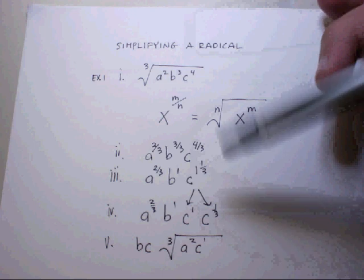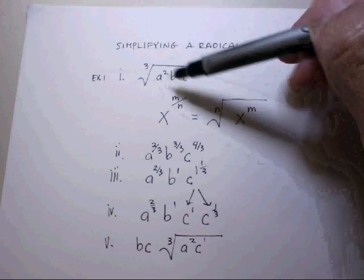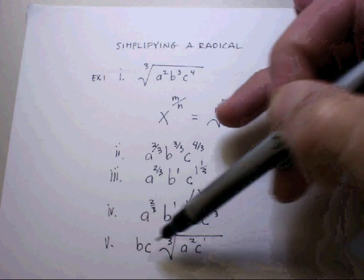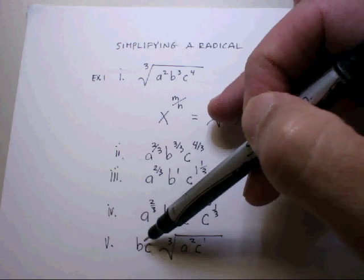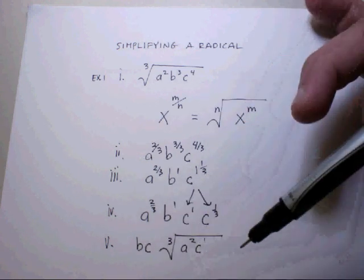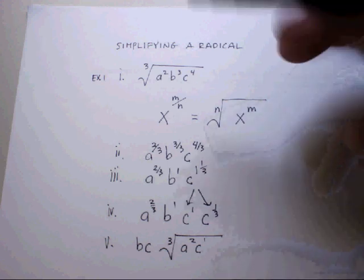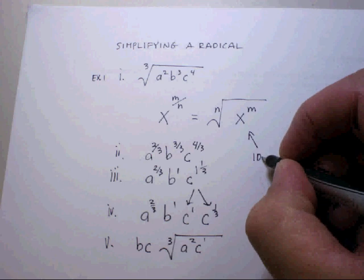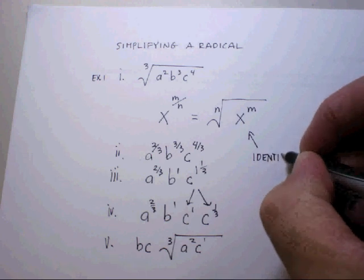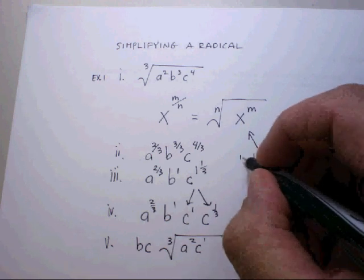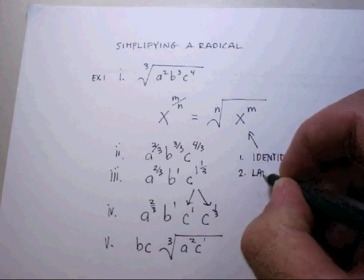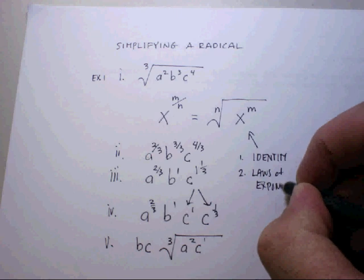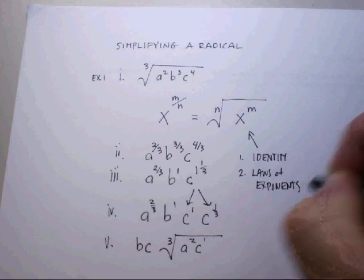What essentially I've done here, then, is to take this initial radical problem, and I have simplified it and changed it to numbers that go outside the radical and numbers that still remain inside the radical by using this identity. And then I've also used the laws of exponents to simplify my answer. I hope this helps. I'll try some more later on.